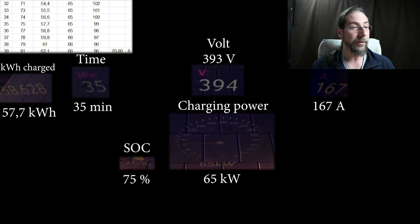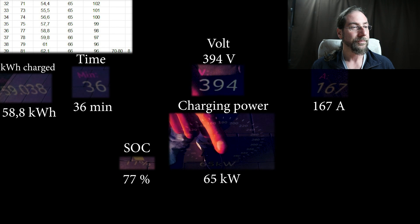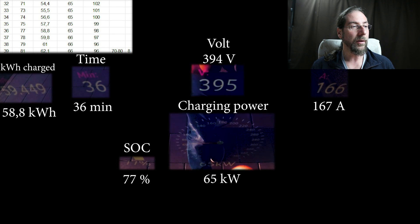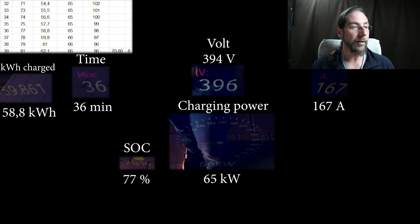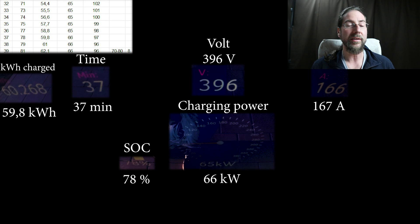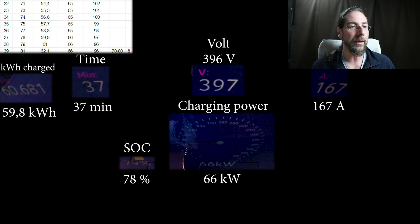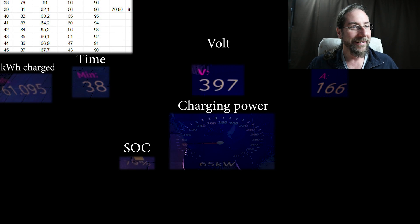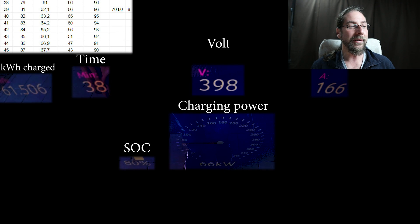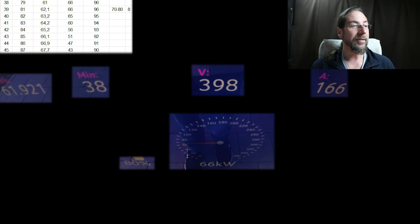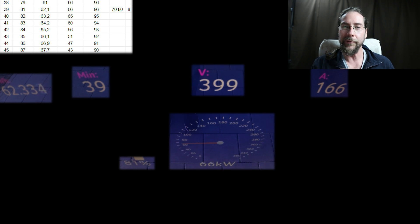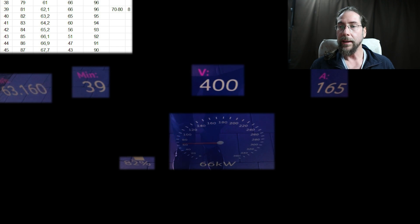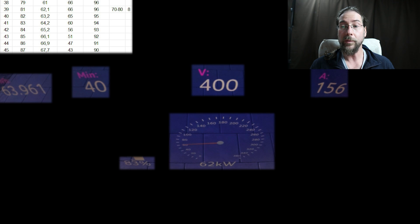76 percent after 35 minutes, 65 kilowatts still, almost 60 kilowatt hours charged. After 37 minutes we're at 78 percent, still 66, 65 kilowatts of power, almost reaching the 400 volts. 80 percent after 38 minutes, 62 kilowatt hours charged, still 66 and it's hovering around that 65, 66 kilowatts power, almost at the 400 volts. 60 to 70 we did, 70 to 80 percent took eight minutes, 80 to 90 percent will take 10 minutes, and then the last 90 to 100 will take 15 minutes.